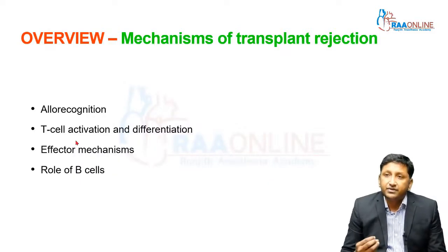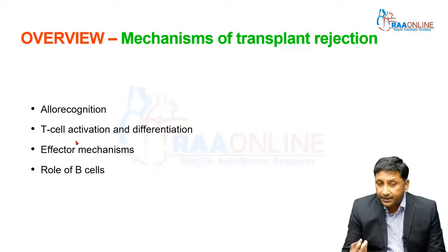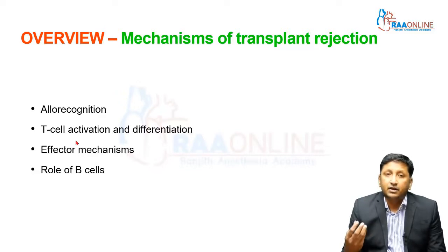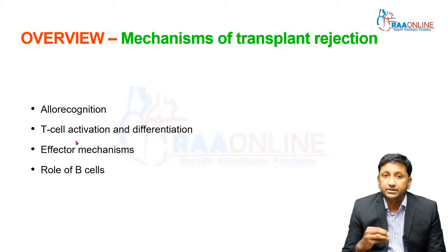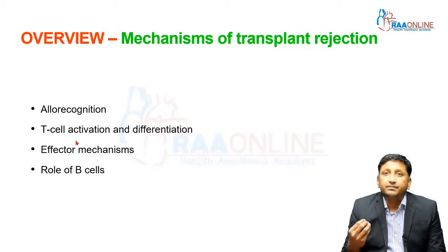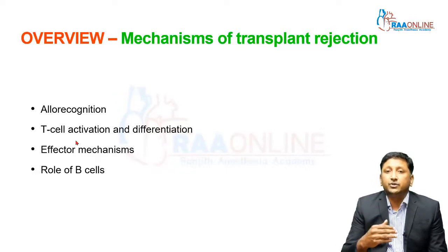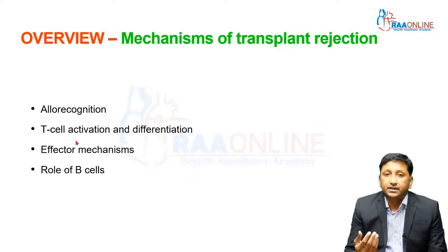The overview of the mechanism of transplant rejection starts with allo recognition. The graft we implant — whether a kidney, liver, pancreas, or small bowel — is called an allo, meaning someone else's organ is in someone else's body. Our body recognizes it as a foreign particle. Next is T-cell activation and differentiation, third is the effector mechanisms, and fourth is the role of B-cells. We need to know these stages because only then can we understand how to prevent rejection.